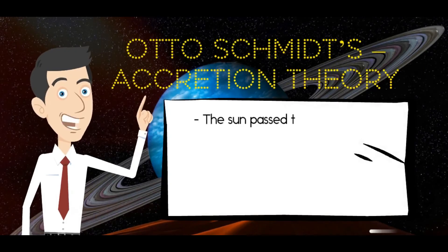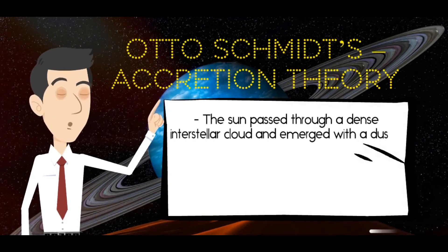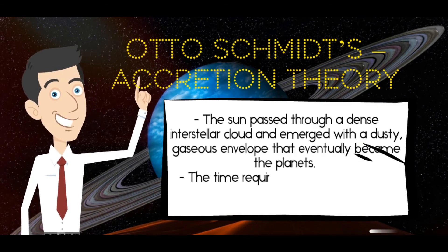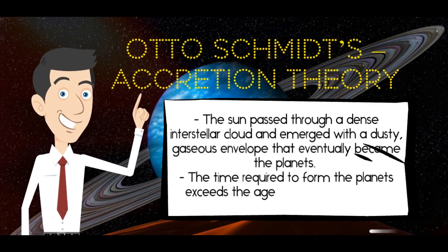In Otto Schmidt's accretion theory, the sun passed through a dense interstellar cloud and emerged with a dusty gaseous envelope that eventually became the planets.